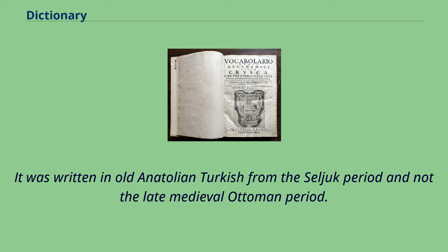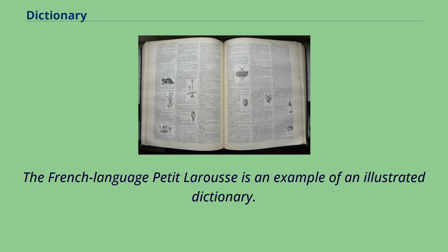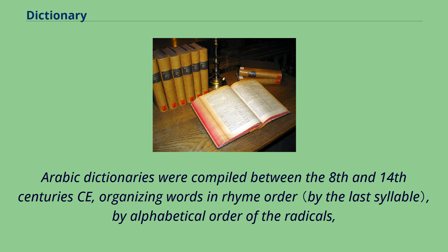It was written in Old Anatolian Turkish from the Seljuk period and not the late medieval Ottoman period. In India around 1320, Amir Khusrow compiled the Khaliq-e-Bari, which mainly dealt with Hindustani and Persian words. Arabic dictionaries were compiled between the 8th and 14th centuries CE, organizing words in rhyme order, by alphabetical order of the radicals.